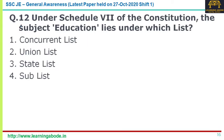Question number twelve: under Schedule 7 of the Constitution, the subject education lies under which list? Education lies under the concurrent list. When the Constitution was originally written and adopted, education was in the state list. In 1976, under Article 42 of the Constitution, an amendment was added, and after that education came under the concurrent list — enabling the government to draft the National Education Policy. Answer: concurrent list.